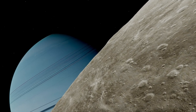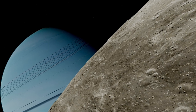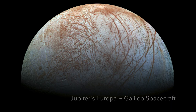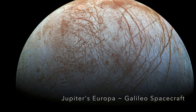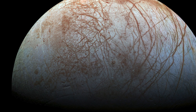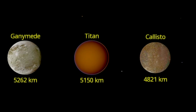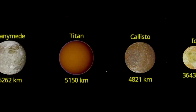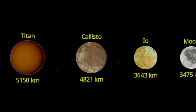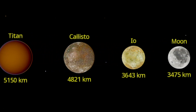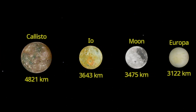Far from being passive bystanders, moons of the Solar System are active participants that can shape the fates of worlds, such as Earth, and in some cases may even hold the key in discovering extraterrestrial life. I'm the Cosmic Skipper and today we're exploring moon types and how they provide crucial insights into the history and evolution of the planet they orbit — a key element in understanding the Solar System's formation and its planetary systems.